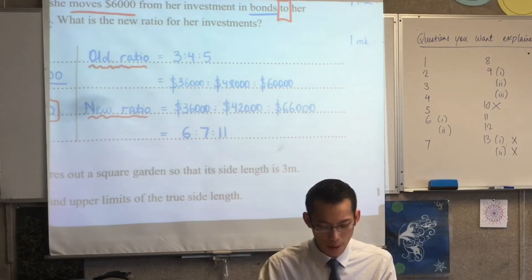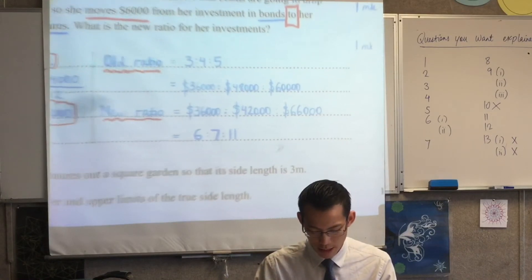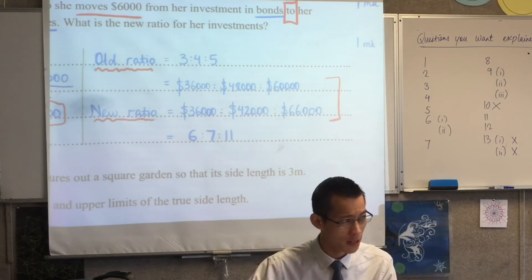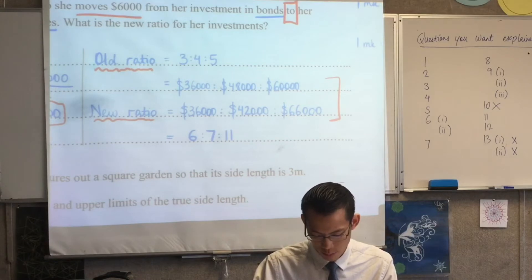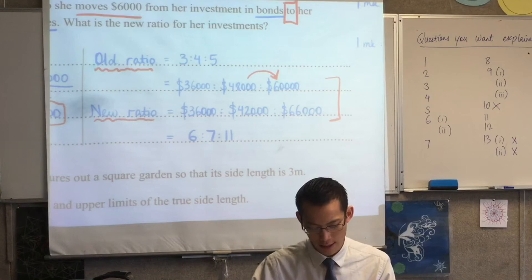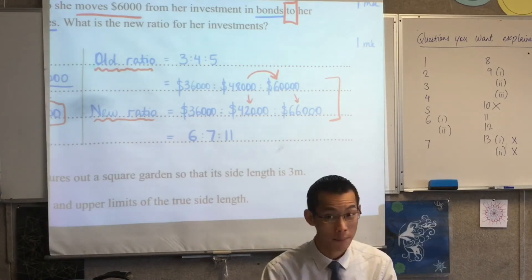Now, remember we were pointing out, okay, $6,000 moves. So you can see in these two lines here where the movement of money is. Can you see the numbers that change? Can you see the change there? Do you see that $6,000 has moved from here to here, right? Which is why this number is 6,000 smaller and this one is 6,000 bigger.